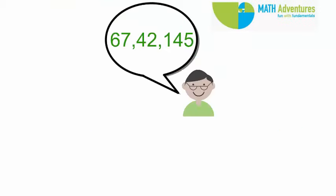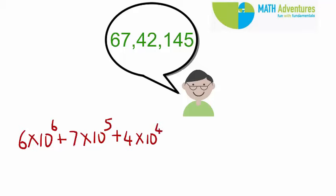How will we represent 67,145 using power notation? Is it not 6 into 10 to the power of 6 plus 7 into 10 to the power of 5 plus 4 into 10 to the power of 4 plus 2 into 10 to the power of 3 plus 1 into 10 to the power of 5?